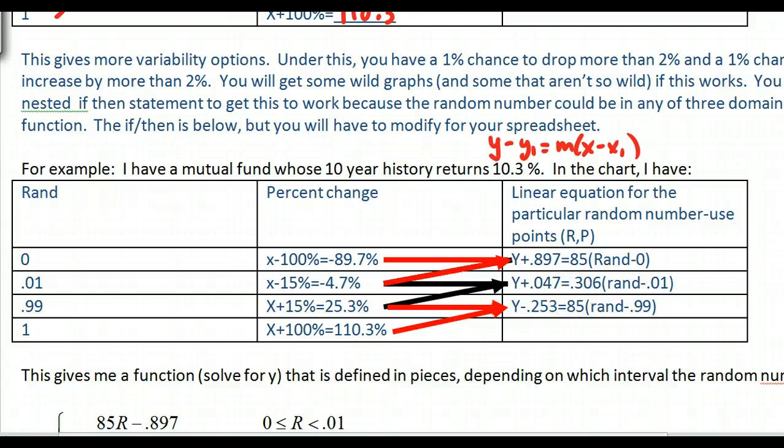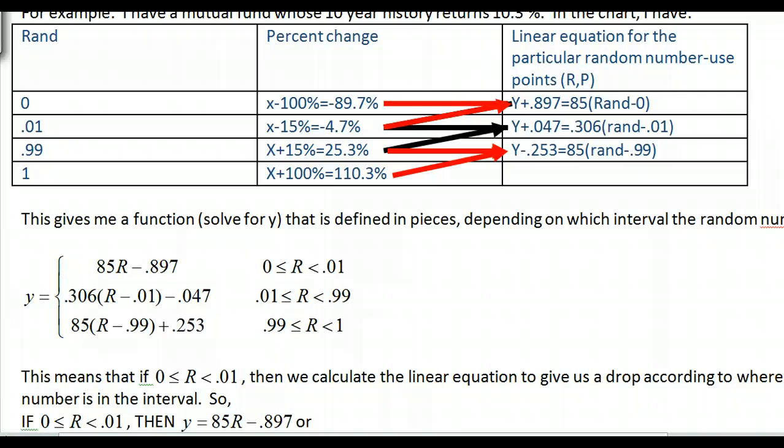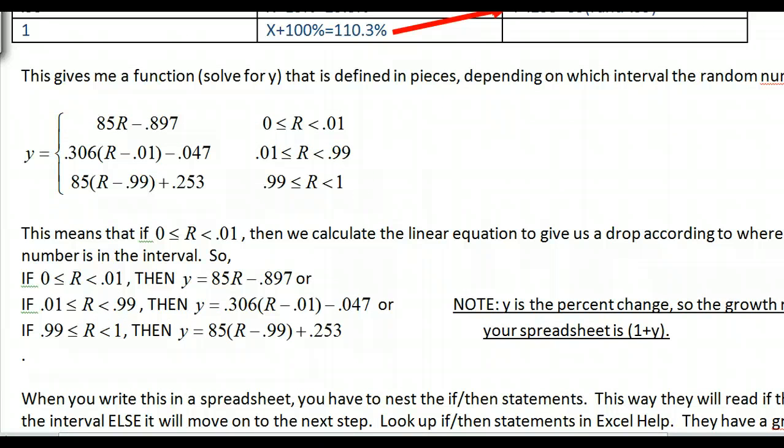You should get a setup like this and get your three equations. Now with that, we have to add in what we call an if-then statement. This translates to a piecewise function too. Between this value, I have this equation. If my random number turns out to be in between 0 and 0.01, I'm going to use this equation. If it's going to be in between here, I'm going to use this one and so on.